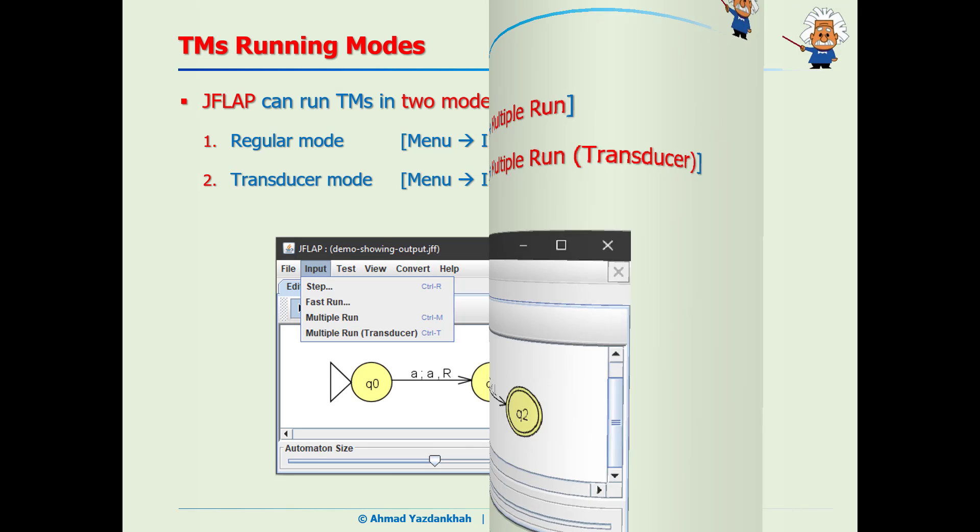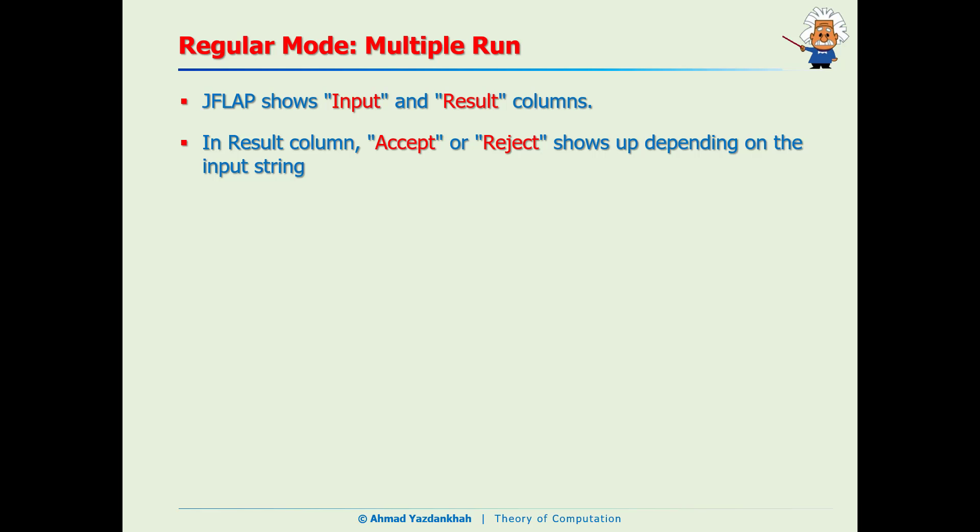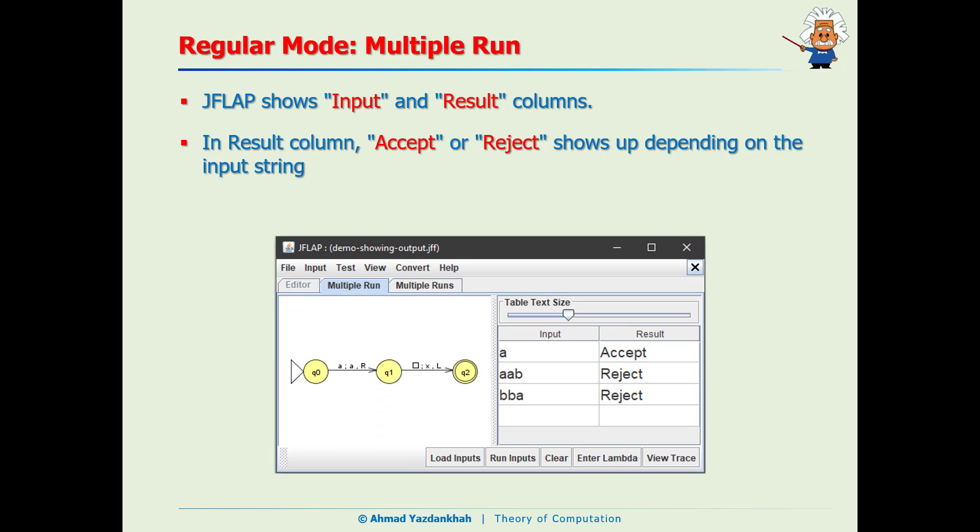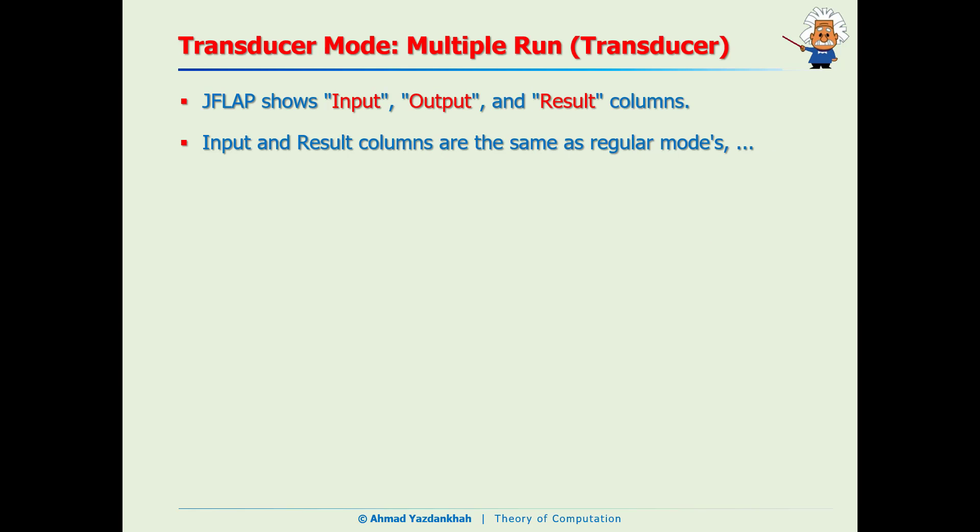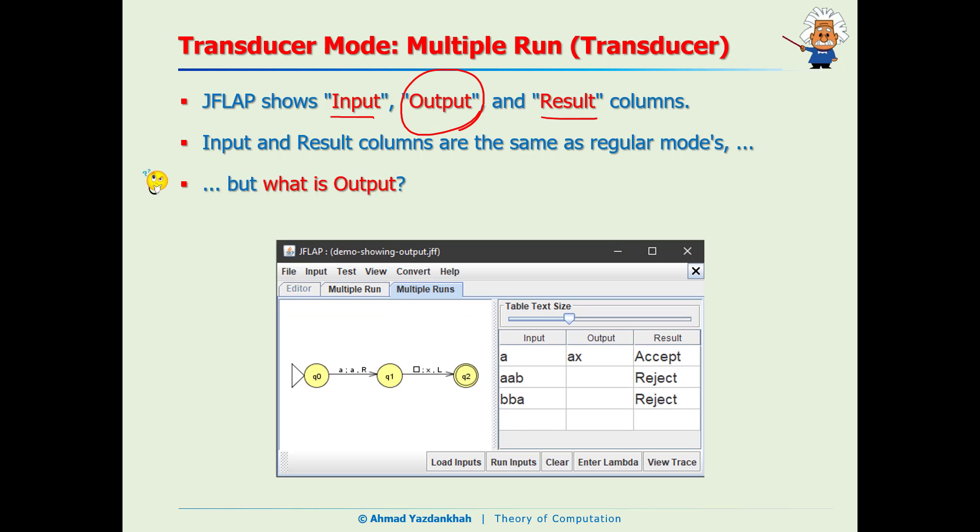Now let's focus on each one. In the regular mode Multiple Run, JFLAP shows the input and result columns, and in result column we can see the accept or reject, something like this. And in the Multiple Run Transducer mode, not only we have input and the result, but also we have output as well, like this.